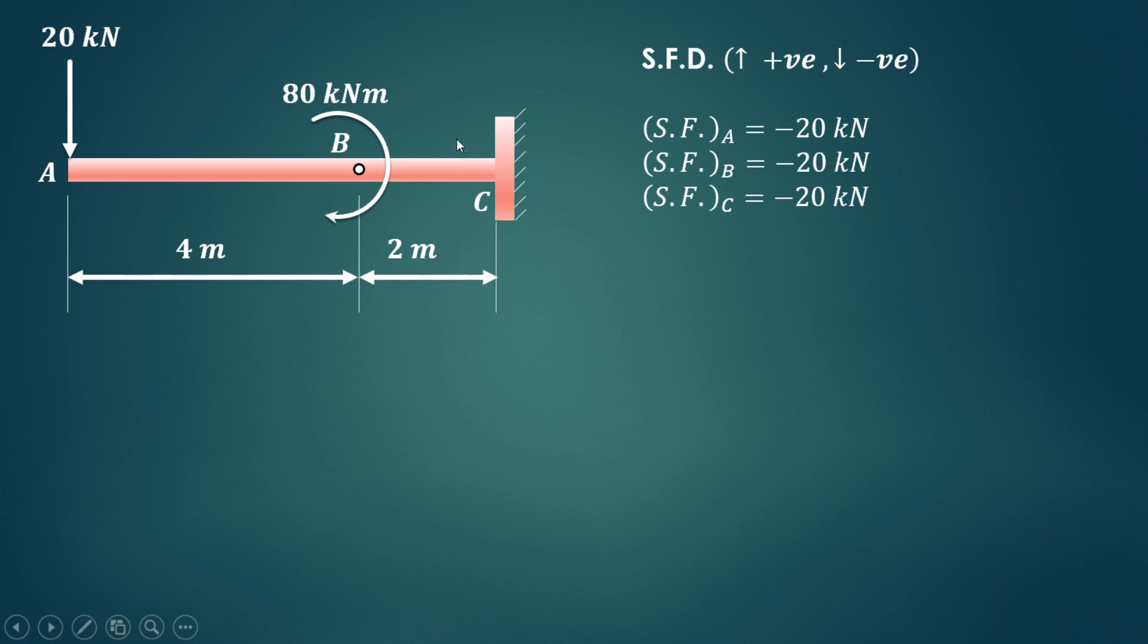We'll first draw the reference line. Then the various values at A, B and C are 20 kN and as we are having the values negative we have drawn the diagram below the baseline. All these values are same so we are getting this particular rectangular type of diagram in case of shear force diagram.